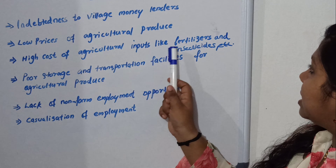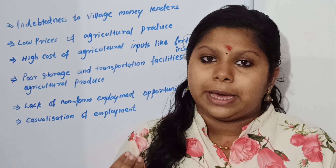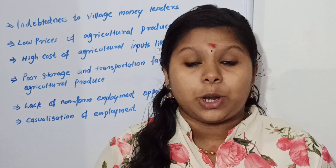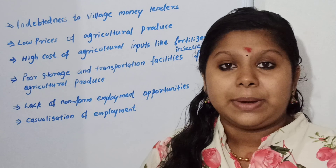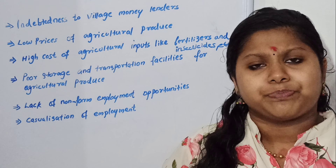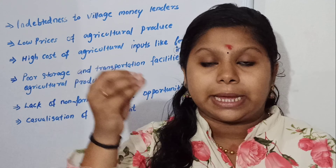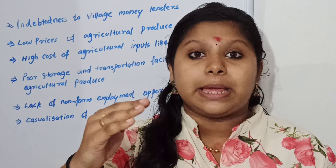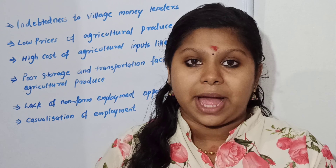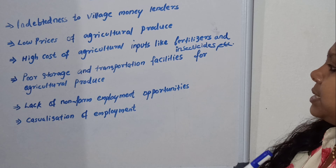Next, high cost of agriculture inputs like fertilizers and insecticides. Friends, we all know that when we want to cultivate or harvest anything, a lot of insecticides and pesticides are needed. The point is that when farmers want to buy these inputs, the cost is very high. So, high cost of agriculture inputs like fertilizers and insecticides is a major problem.